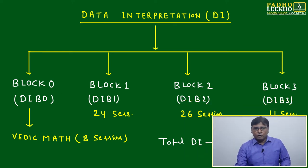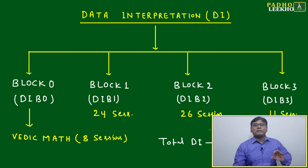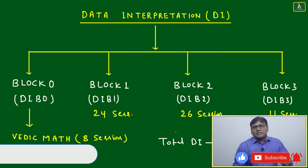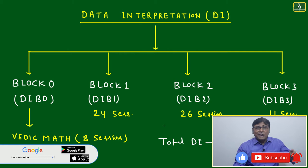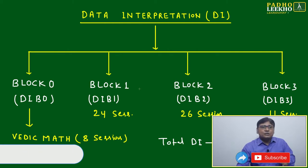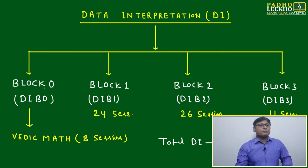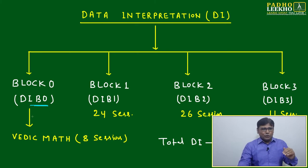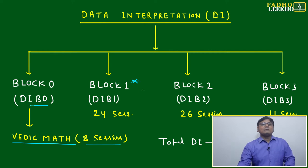There will be a total of 69 sessions in DI, and all these 69 sessions will be quality sessions. Once you have taken all 69 sessions, you can think about the 100 percentile in DI — I'm 100% sure. Block Zero is related to your fundamentals, below CAT level. Here I am going to discuss Vedic math — a total of eight sessions.